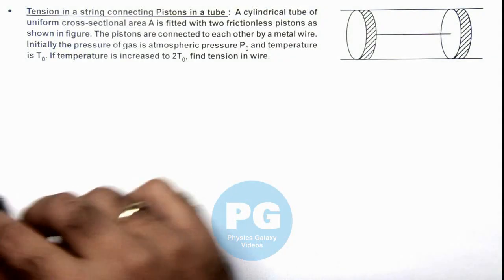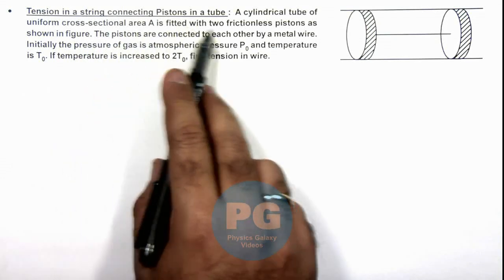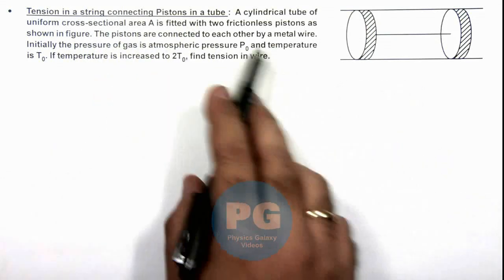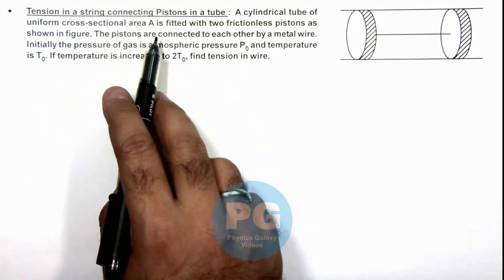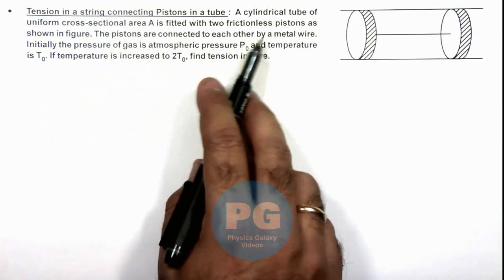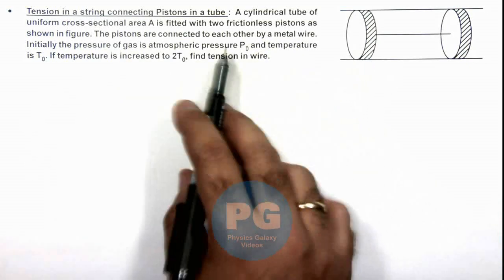In this illustration we'll discuss tension in a string connecting pistons in a tube. Here we can see in the figure a cylindrical tube of uniform cross-sectional area A is fitted with two frictionless pistons, as we can see, and they are connected by a metal wire.